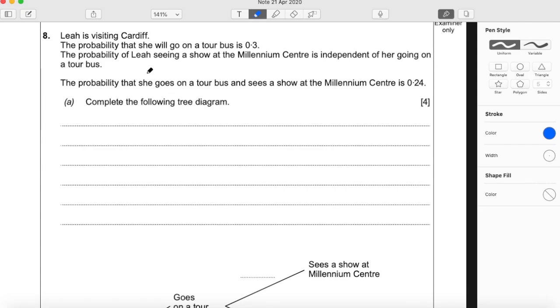Question 8. Leah is visiting Cardiff. The probability that she'll go on a tour bus is 0.3. The probability of Leah seeing a show at the Millennium Centre is independent of her going on a tour bus. The probability that she goes on a tour bus and sees a show at the Millennium Centre is 0.24. Part A, complete the following tree diagram.